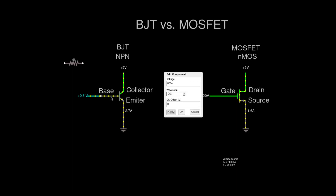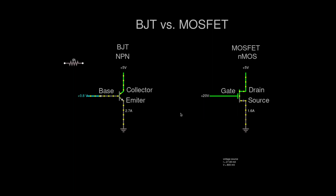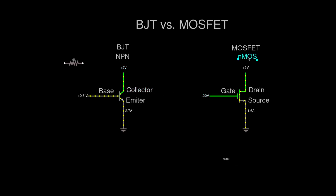That's why BJTs are called current-controlled devices, and MOSFETs are called voltage-controlled devices. Thanks for watching.